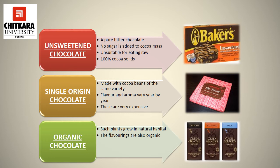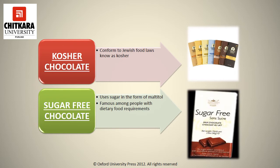Organic chocolate is made with plants that grow in a natural habitat, and the flavorings are also organic. Kosher chocolate is similar to the Jewish food laws known as kosher. The last type is sugar-free chocolate, which uses sugar in the form of maltitol and is popular among people with dietary food requirements.